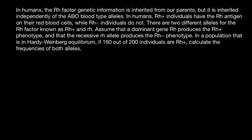Hello and welcome to Nikolai's genetics lessons. Today's question is: in humans, Rh factor genetic information is inherited from our parents, but it is inherited independently of ABO blood type alleles.